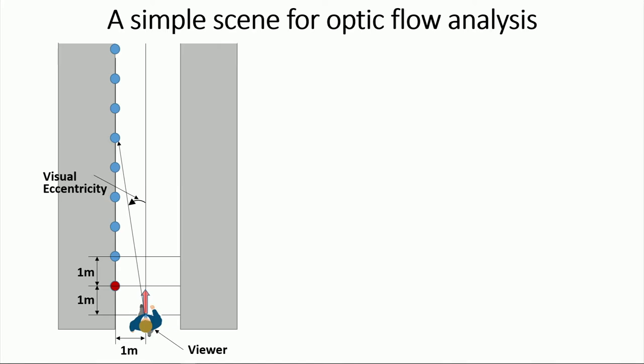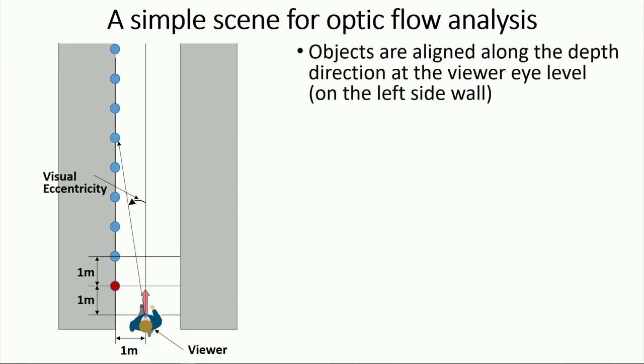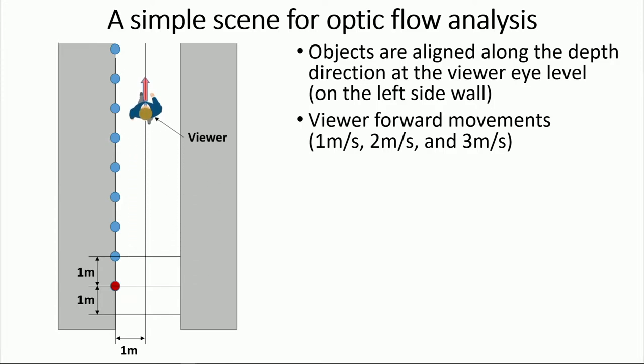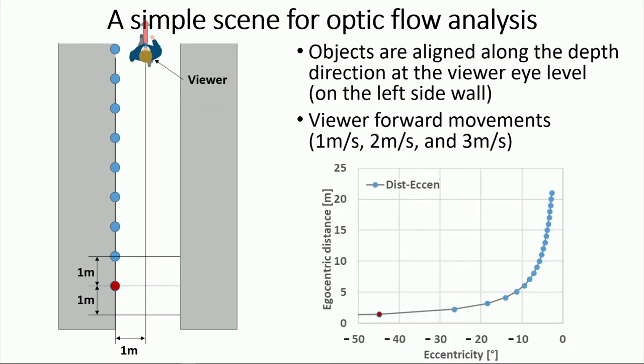To apply our 3D optic flow analysis, I will use a simple scene geometry to avoid the dimensional complication of the y direction and x direction change. As shown in the figure, objects are positioned on the left side of the wall along the depth direction, and they are positioned at viewer's eye level. The viewer is assumed to move straight forward at 1 meter per second, 2 meters per second, 3 meters per second. This configuration eliminates any vertical motion, so we can just focus on the object's horizontal and depth motion. Notice that in this setup, far objects will be shown closer to the viewer's central field of view, which is zero eccentricity.